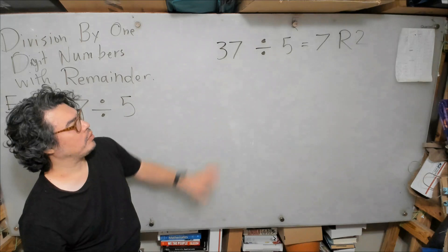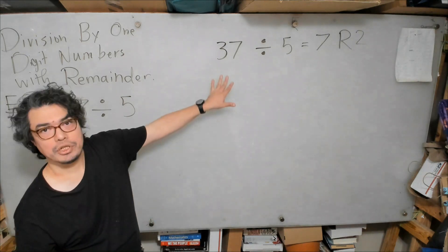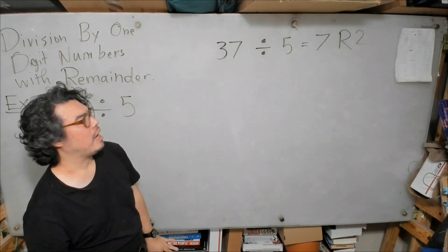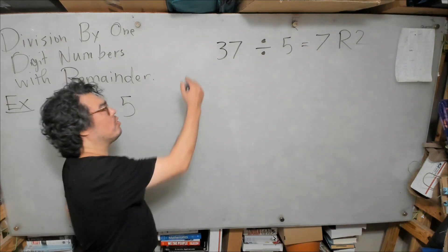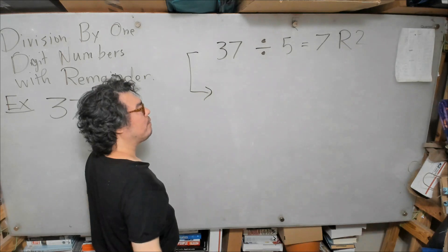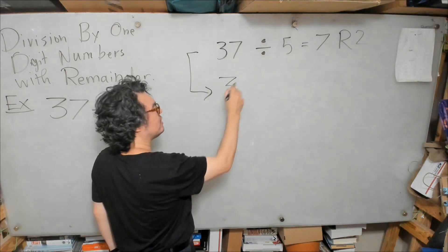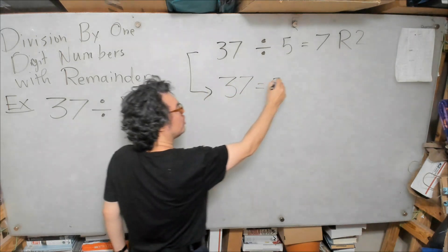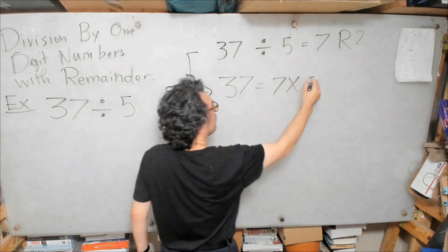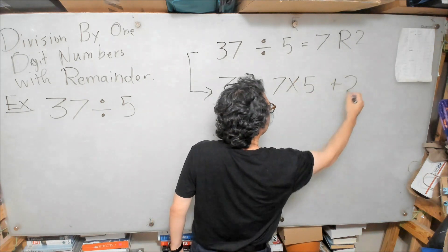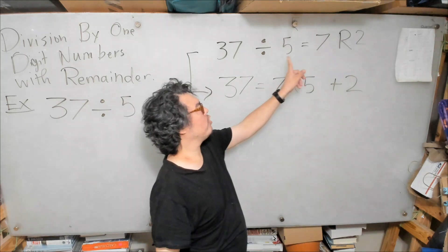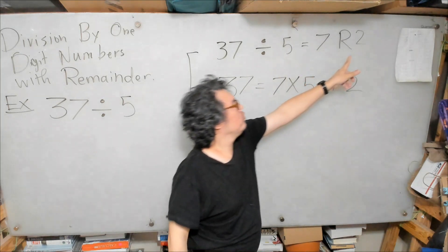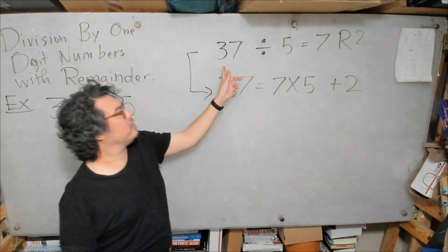So, for example, here, this is our result, of course. And again, as I mentioned before, whenever you see a division result, I want you to always think to yourself, aha, what does this mean? This means that I can write it as 37 equals 7 times 5 plus 2. Your quotient times the number you're dividing by plus the 2 will equal the number you're dividing.